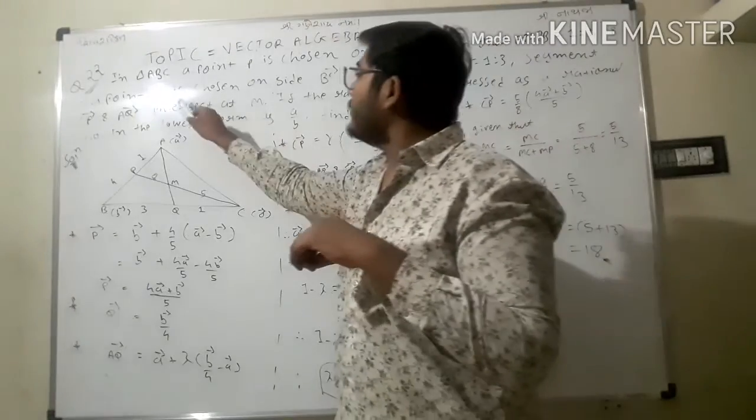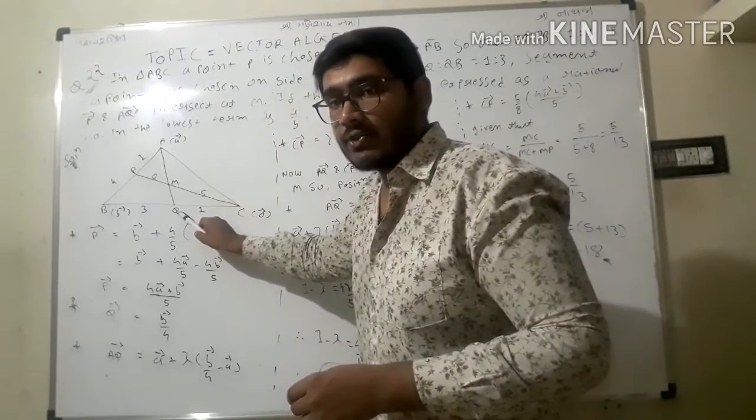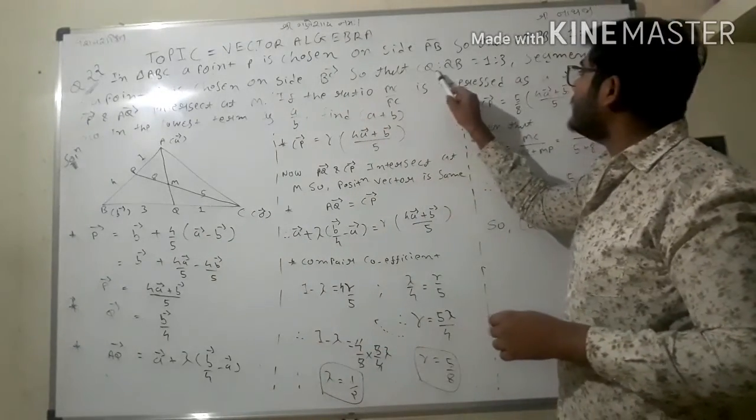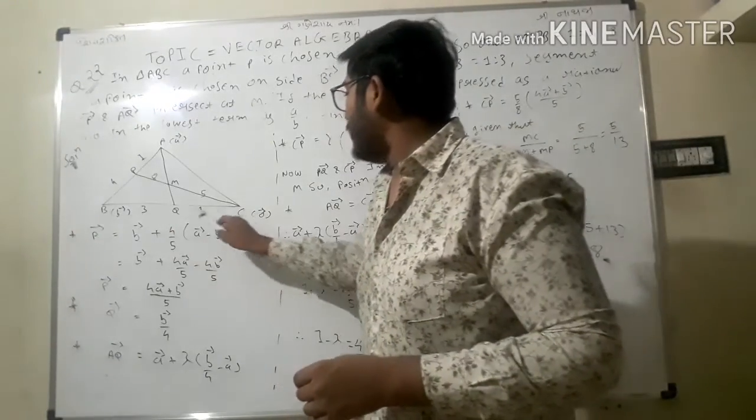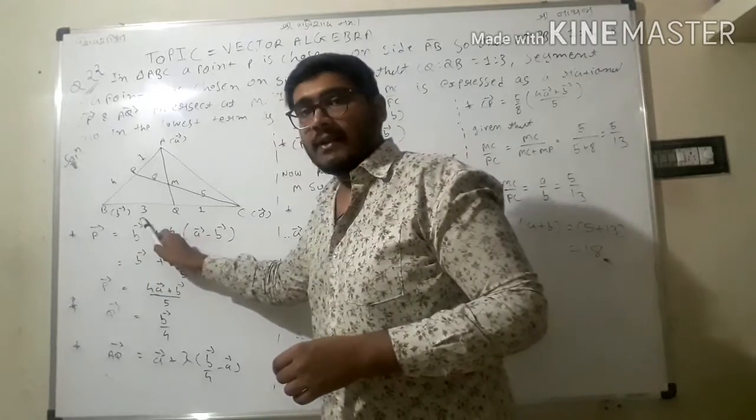A point Q is chosen on side BC so that CQ:QB equals 1:3.